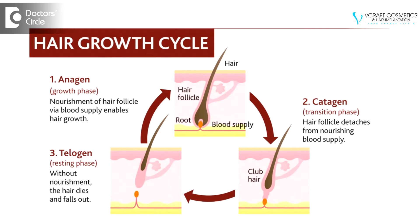So in androgenetic alopecia, the anagen hair cycle period is reduced, and therefore you will have more anagen cycles and growth cycles in a shorter period of time. To summarize: an anagen cycle extends between three to seven years, the catagen cycle is about two to three weeks, and the telogen cycle is about three to four months — together these constitute one complete hair growth cycle.